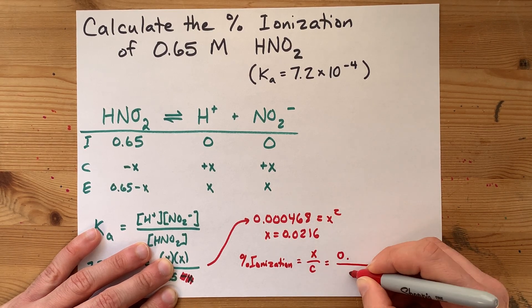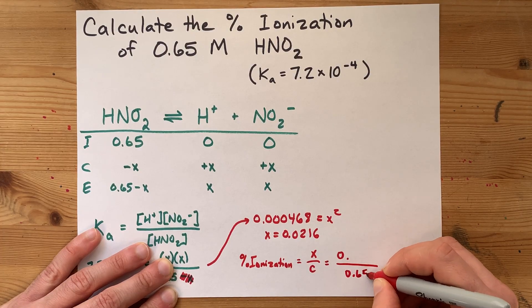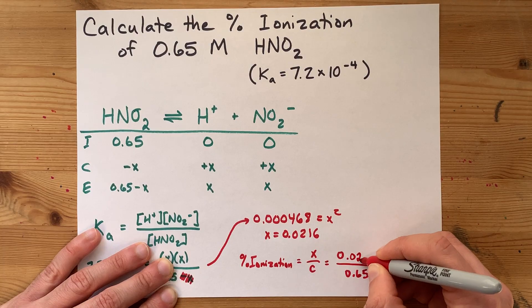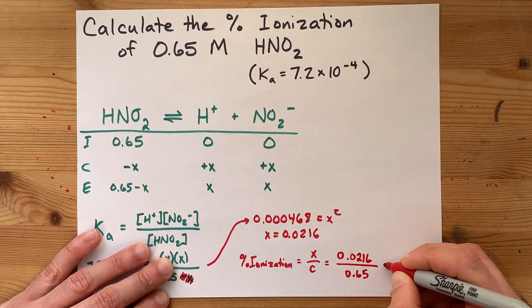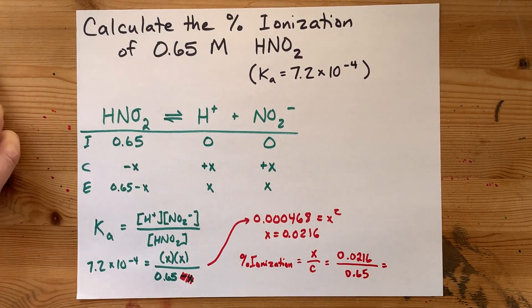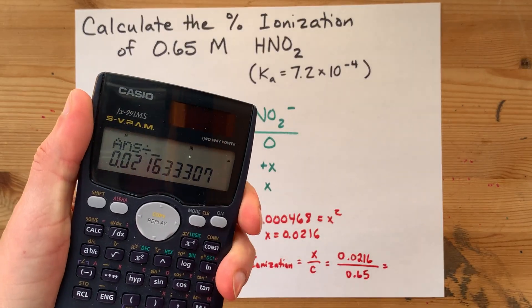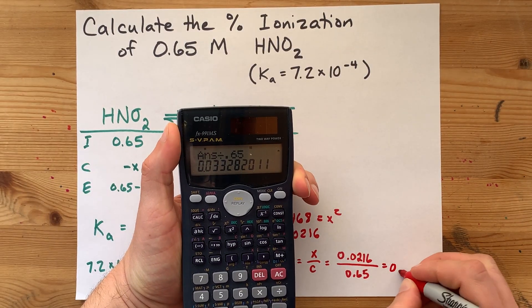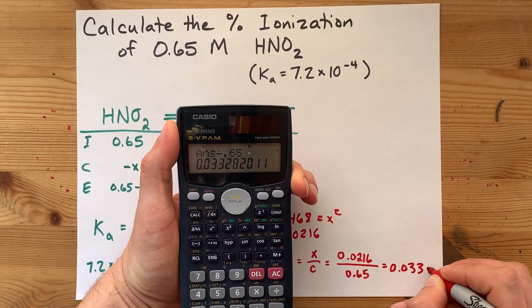Out of the original 0.65 moles per liter, we lost 0.0216 due to ionization. So, divide that by 0.65. You end up with 0.0333.